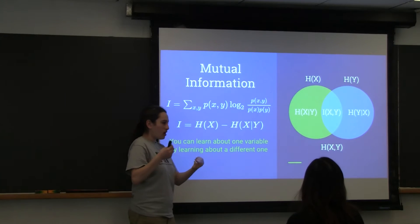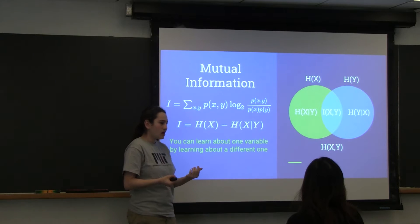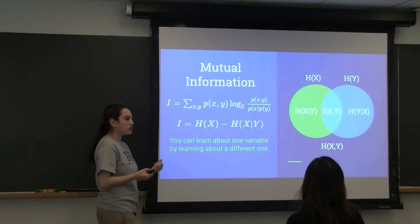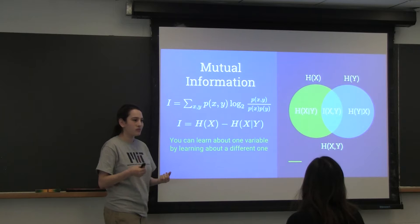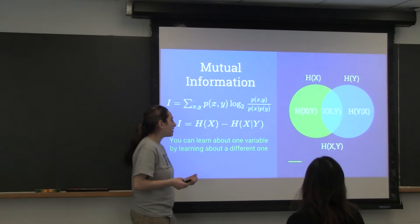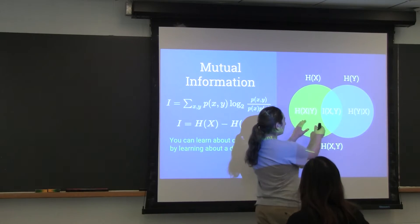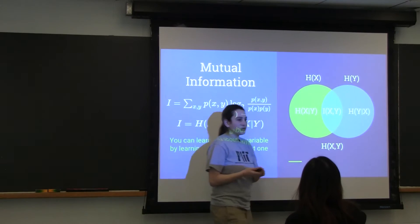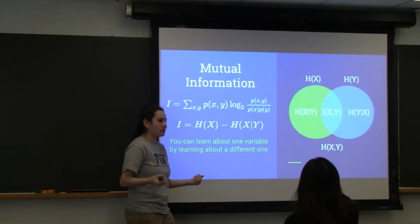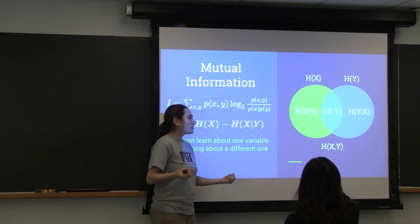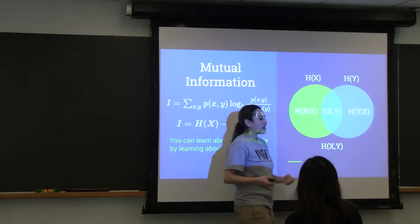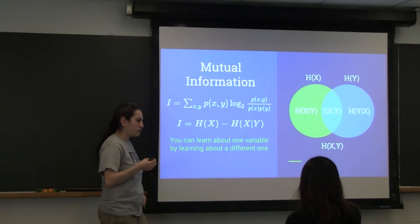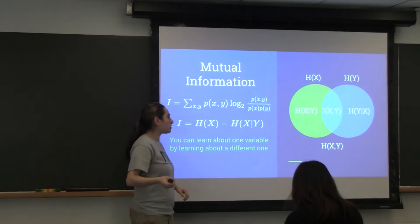For example, if you had two coins, and when you flipped one of the coins you somehow knew that the other coin would also come up the same way, then the mutual information would be the entire Venn diagram. On the other hand, if you had two completely independent coins, like most coins, there would be no overlap. If you're not actually gaining any information from one result about the other.